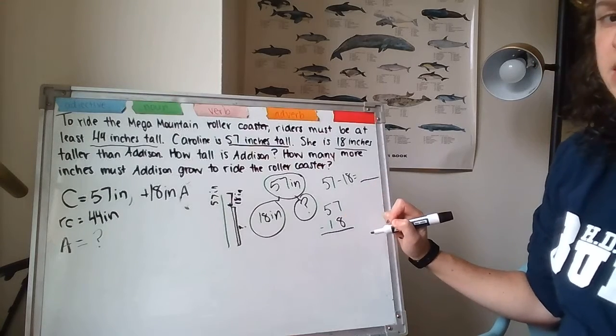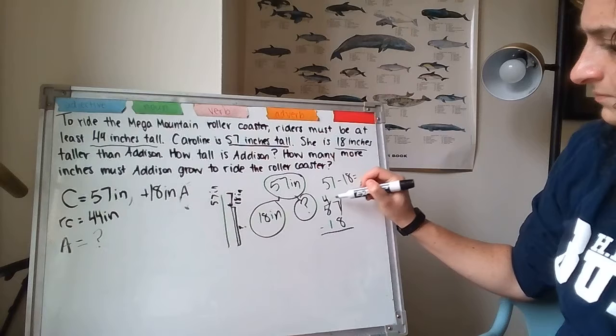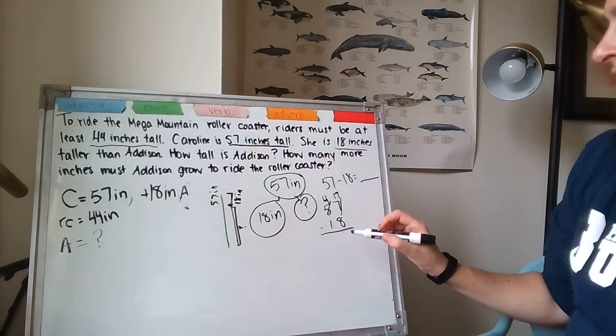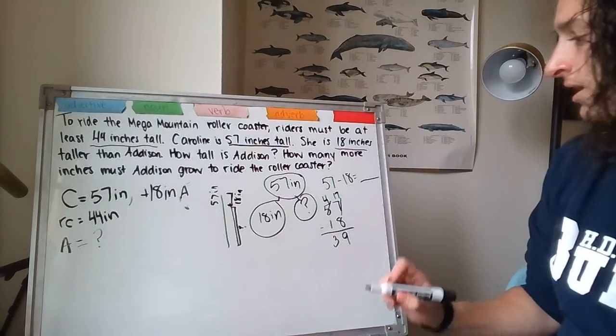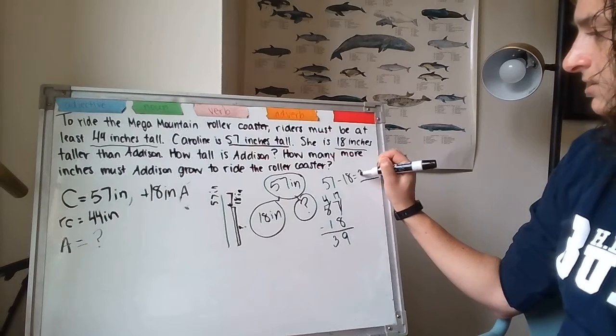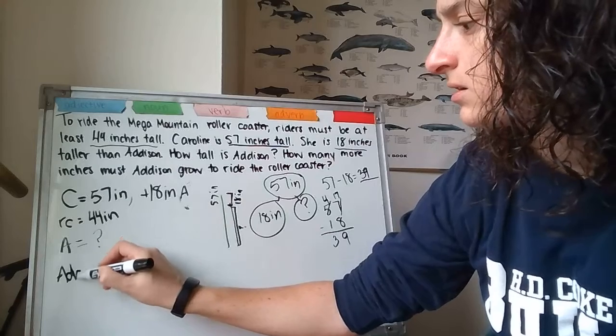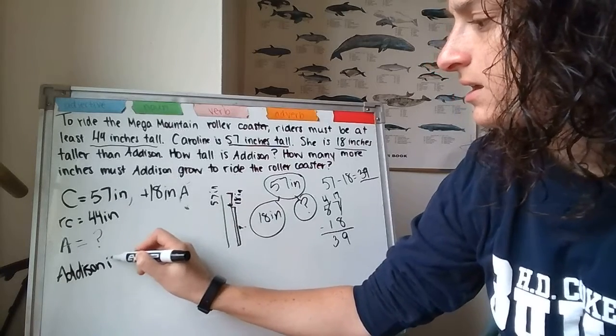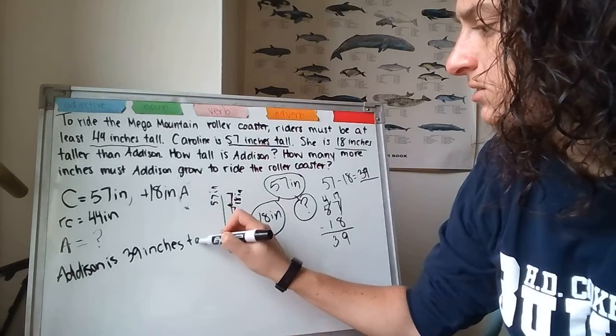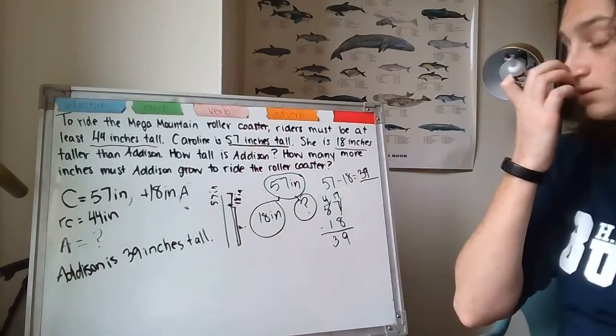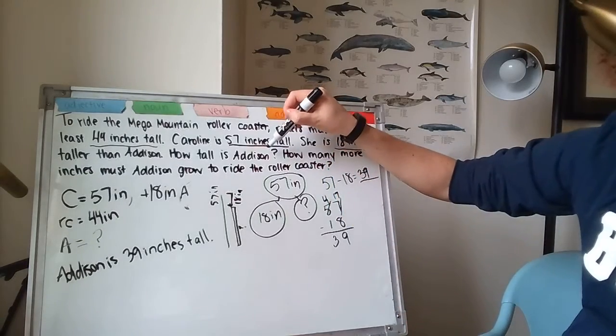Can I do 7 minus 8? Gotta unbundle. 17 minus 8 I can do. Okay. 57 minus 18 is 39. So, Addison is 39 inches tall. Now, I've written my full sentence, but I have a second question. So, let's check off. I did how tall is Addison.